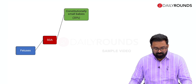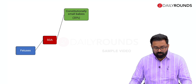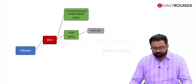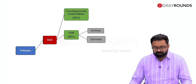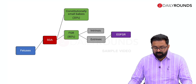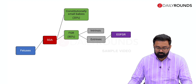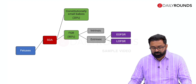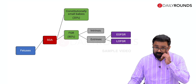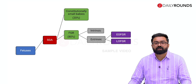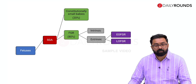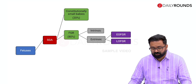Fetuses are broadly classified as SGA or AGA. In SGA babies, 20 percent are constitutionally small and 80 percent are growth restricted, of which a small portion is intrinsic and the larger portion is extrinsic or placental insufficiency-related. In extrinsic FGR, early onset is below 32 weeks and late onset is above 32 weeks. Early onset FGR typically shows umbilical artery abnormality, but in late onset FGR the umbilical artery Doppler could be normal while other Doppler signs may be present.